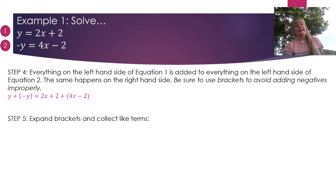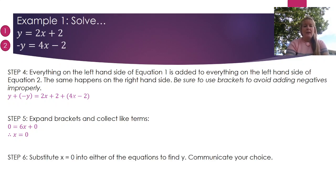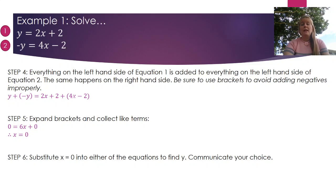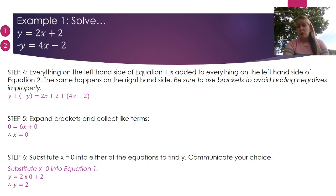Step 5: expand the brackets and collect like terms. On the left-hand side we get 0; on the right, 2x + 4x gives 6x, and +2 - 2 = 0, therefore x = 0. Step 6: substitute x = 0 into either equation to find y, and communicate which equation you're choosing. Equation 1 has no negatives and smaller numbers, so I'll substitute x = 0 into equation 1, giving y = 2.